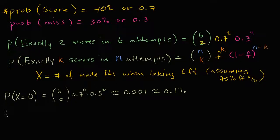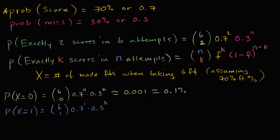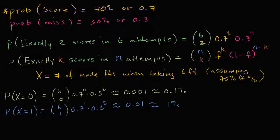Now let's keep going — this is fun! What is the probability that our random variable is equal to one? This is going to be six choose one, times 0.7 to the first power, times 0.3 to the fifth power. And this is approximately 0.01, or we could say 1%. So still a fairly low probability — ten times more likely than zero, but still quite low.